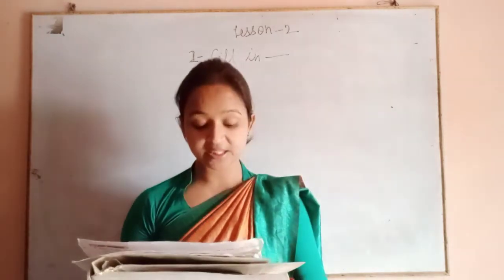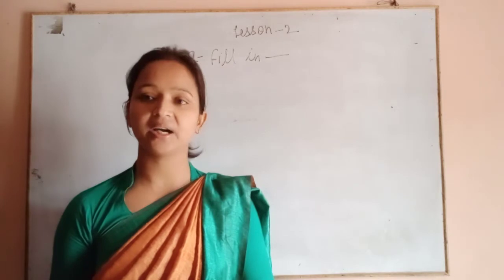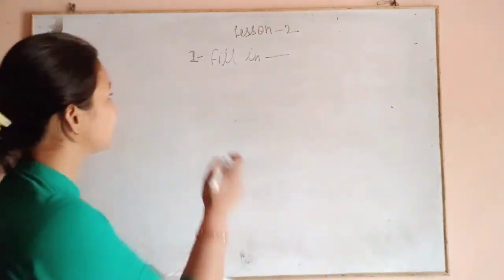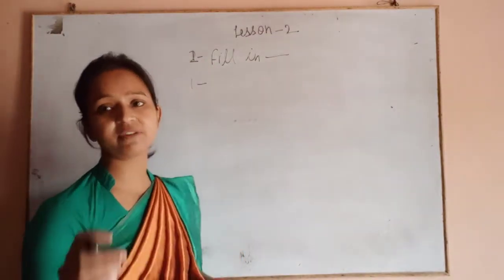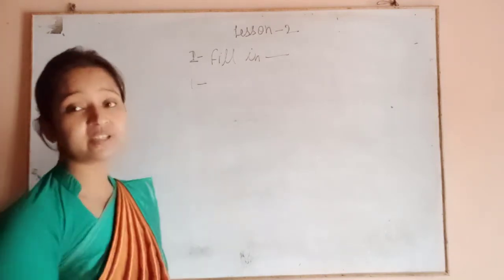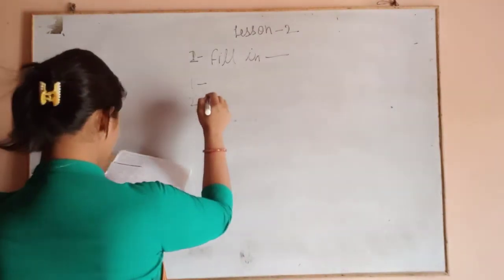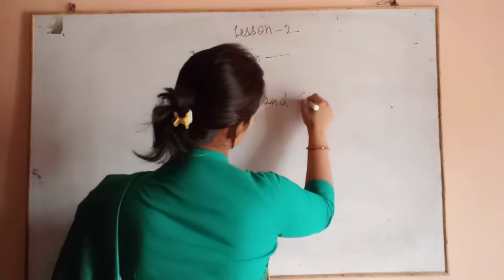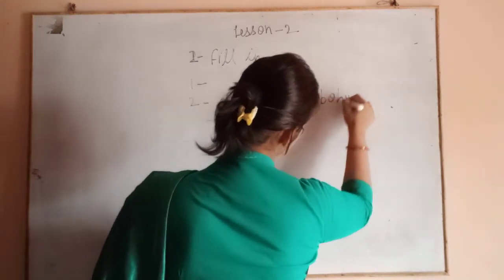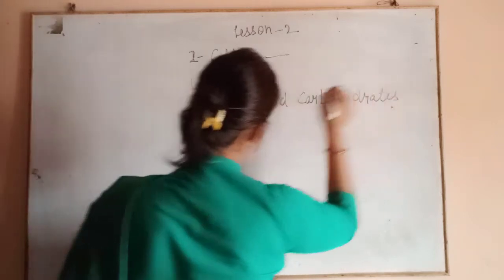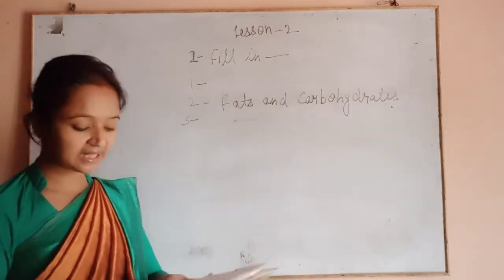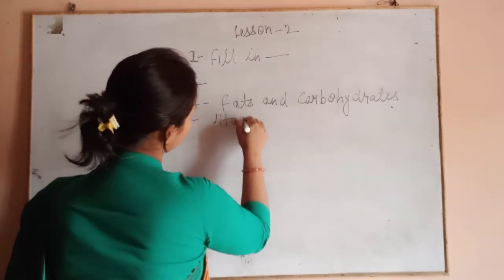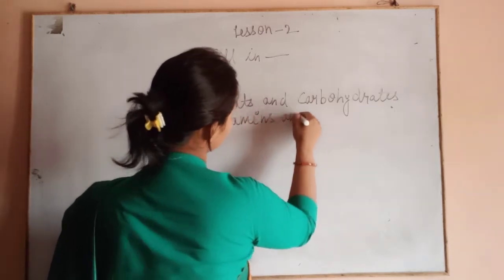The second blank: energy giving foods are fats and carbohydrates. The third blank: protective foods are vitamins and minerals.